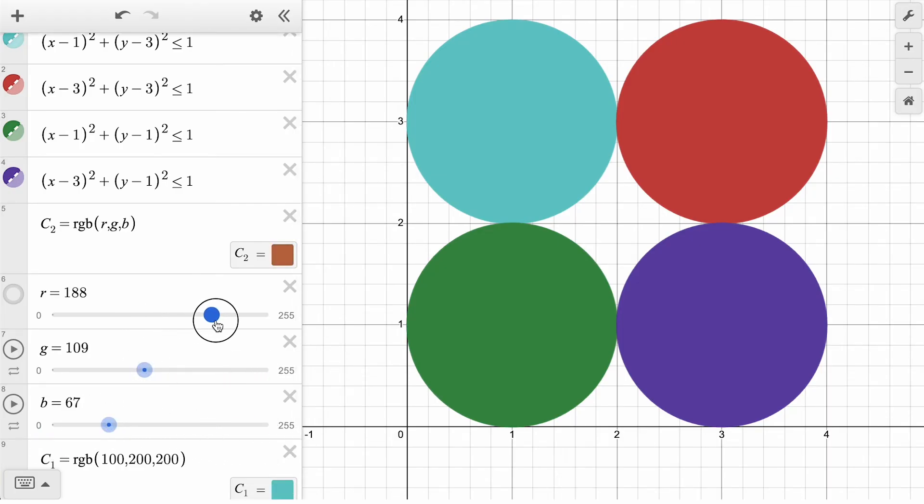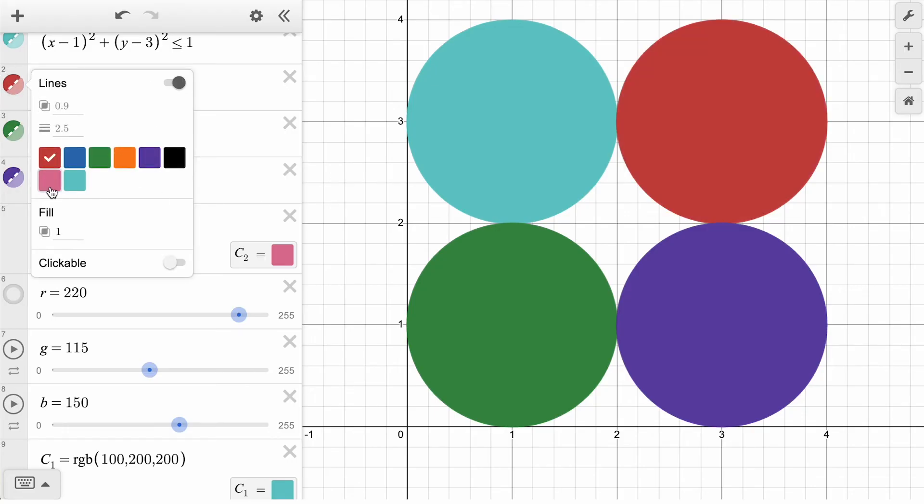Once we find values we like, like this 220, 115, 150, we can go ahead and change the color of our second circle, located in the top right of our graph.